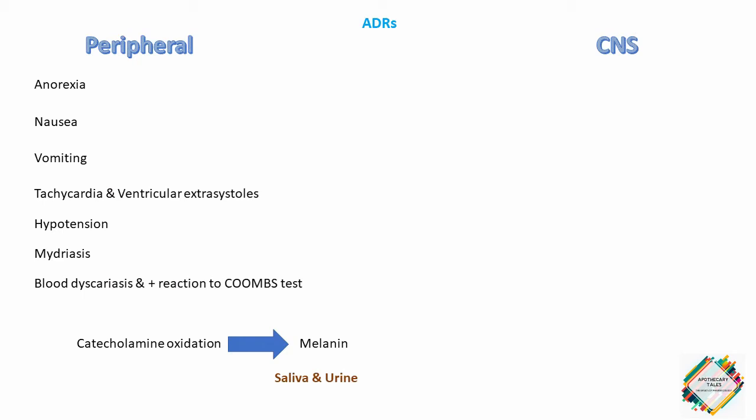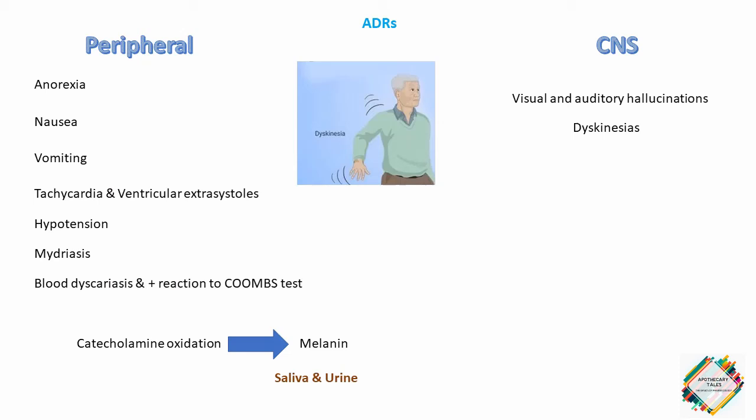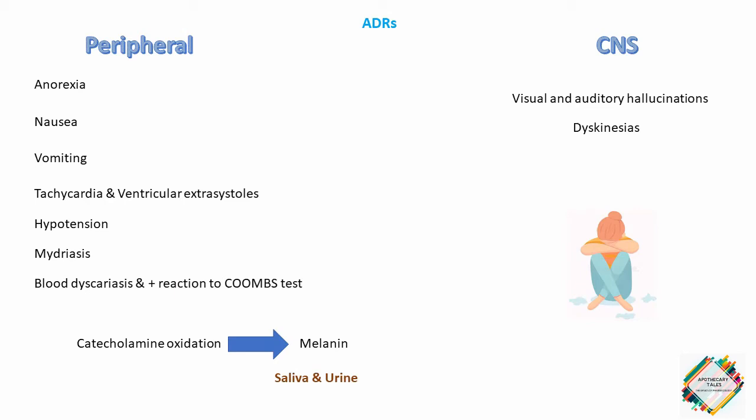Coming to CNS adverse effects, visual and auditory hallucinations and abnormal involuntary movements — that is dyskinesias — usually occur. These effects are the opposite of Parkinsonian symptoms and reflect overactivity of dopamine in the basal ganglia. Levodopa can also cause mood changes, depression, psychosis and anxiety.